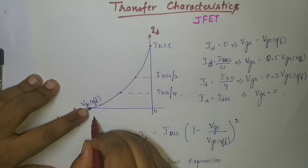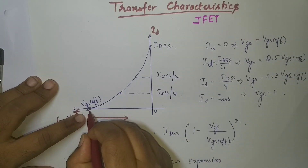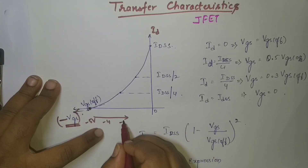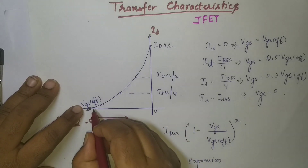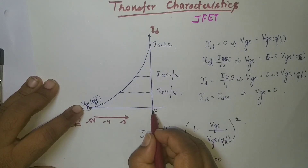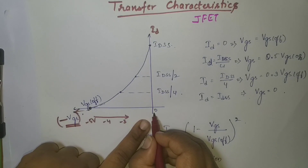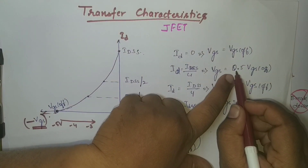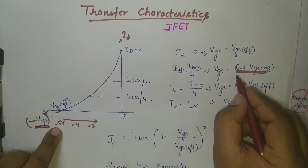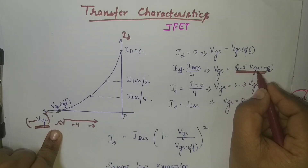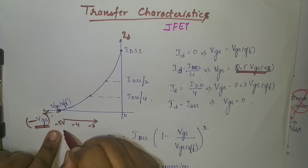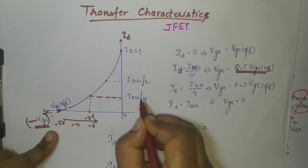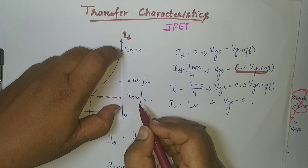As I increase the value of VGS — say from minus 5 volts — increasing it from minus 5 to minus 4, minus 3, minus 2, minus 1, up to 0, the current starts increasing. It reaches a maximum when VGS equals 0. At 0.5 times VGS-off, that is half of minus 5 which is minus 2.5 volts, you get a current equal to IDSS divided by 4, where IDSS is the complete saturation current.